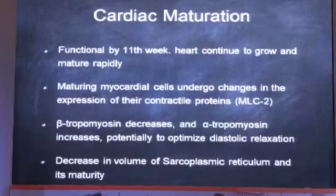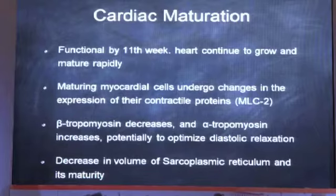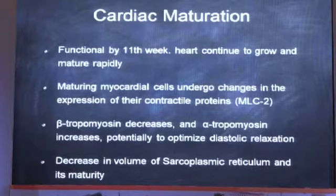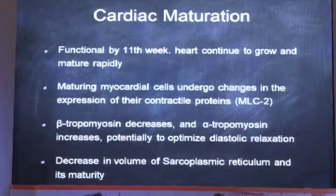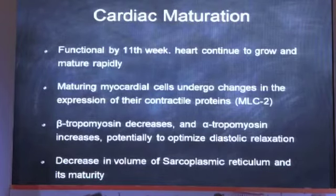By the 11th week of embryonic life the heart is completely functional and developed, but continues to grow and mature rapidly. Maturing myocardial cells undergo changes in the expression of contractile proteins — usually myosin light chain protein 2. MLC1 is responsible for more hypertrophy and contractility; increased MLC1 expression determines hypertrophy, as in right ventricular hypertrophy in tetralogy of Fallot. Beta-tropomyosin decreases and alpha-tropomyosin increases, optimizing diastolic relaxation. Sarcoplasmic reticulum volume decreases and is immature, making neonates more responsive to the ionotropic effect of calcium rather than beta-adrenergic agonists.